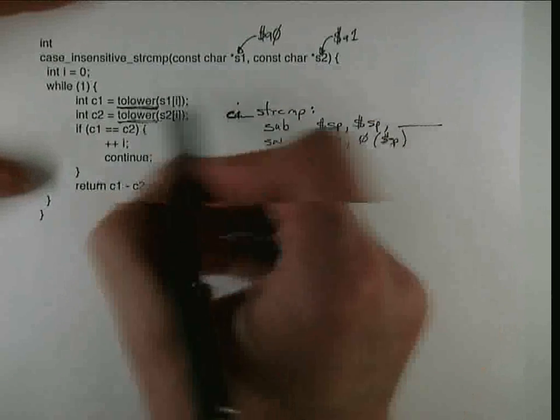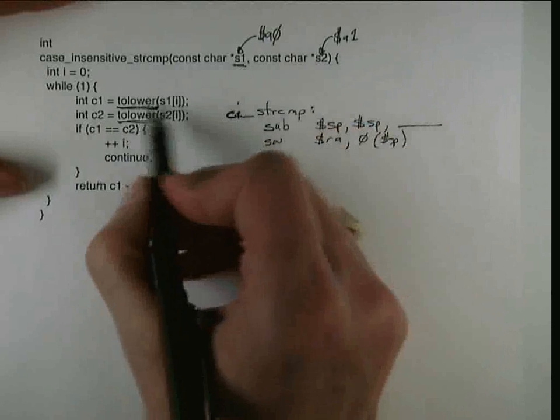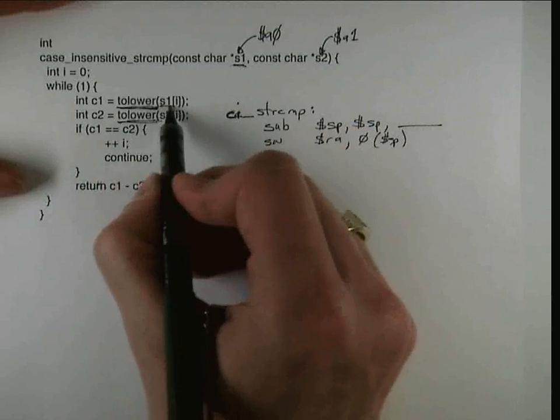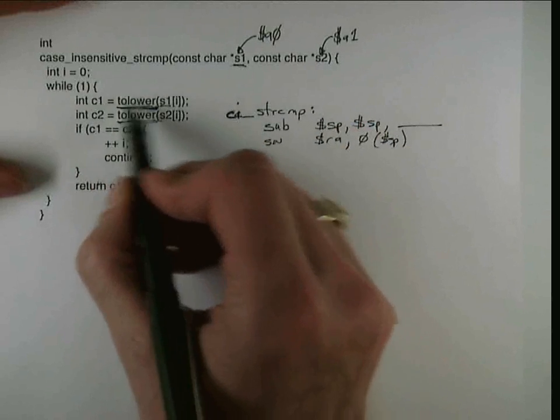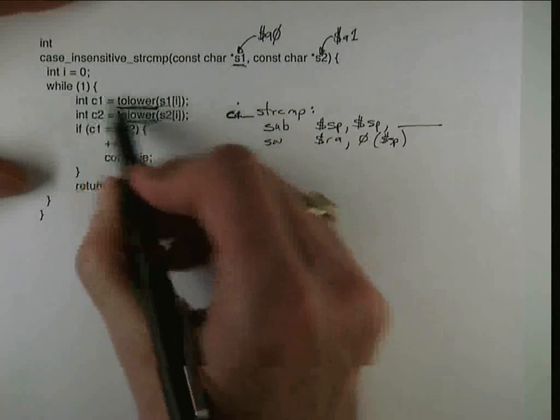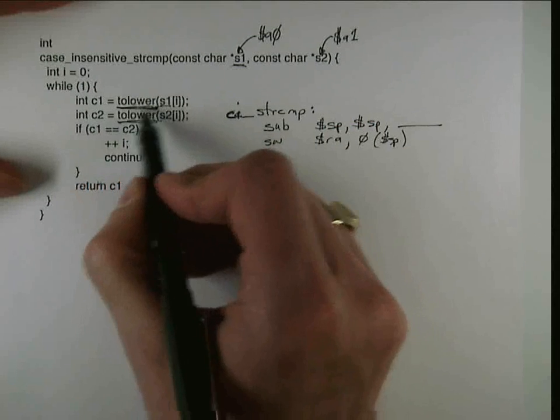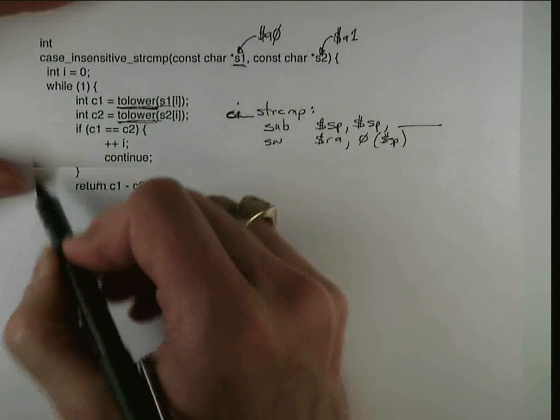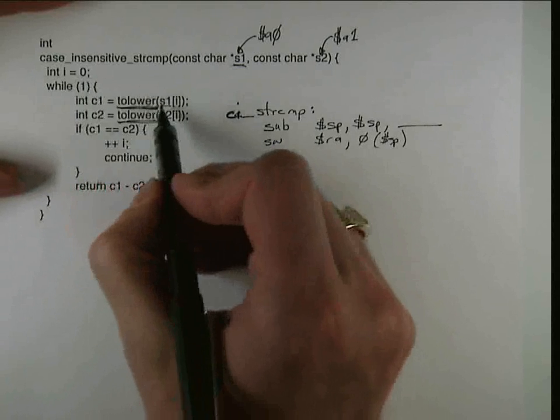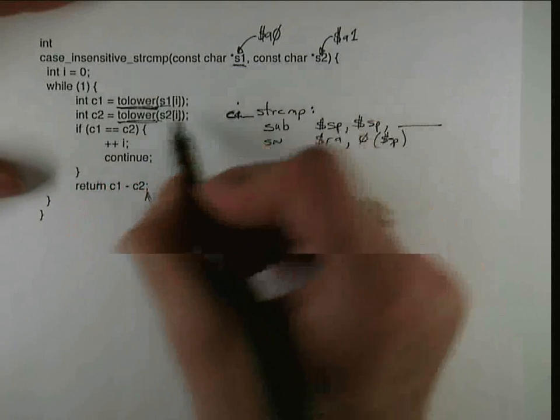in particular there's a number of variables that are going to need to be live after this first call to tolower. The first of which is S1, because although this use of S1 is needed before the call to the function, if we go around and we do a second iteration of the loop, we're going to need S1 again.